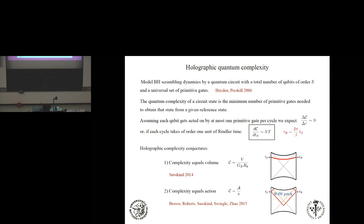What we want from this quantum circuit picture is: if we assume each qubit gets acted on by at most one gate per cycle, then the change in complexity in that cycle should be of order the number of those gates that act — basically the number of pairs or finite clusters — so it will be proportional to the entropy. Further assuming, as Hayden and Preskill did, that each cycle takes of order one unit of Rindler time, and Rindler time is related to Schwarzschild time by a factor of temperature, we expect the time derivative with respect to Schwarzschild time to be constant, proportional both to the temperature and to the entropy of the system. Let's see if we can get that to work.